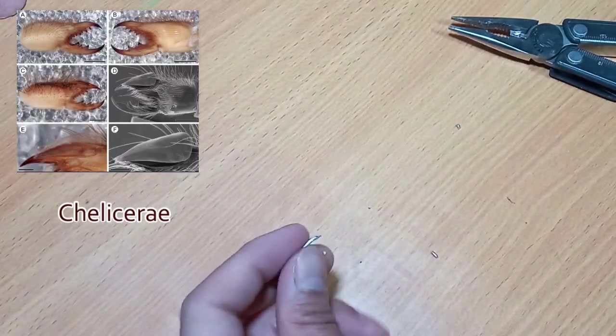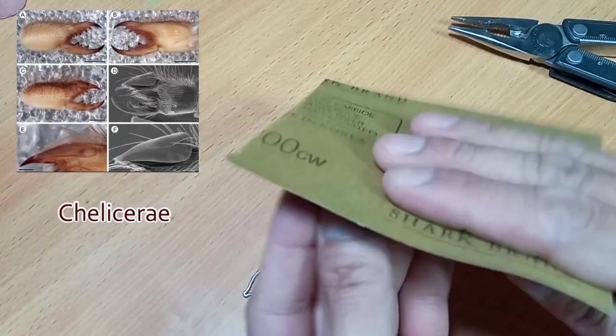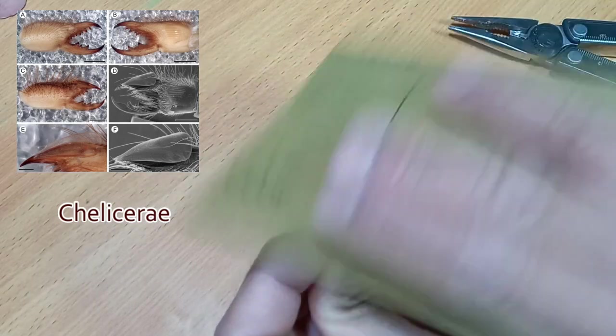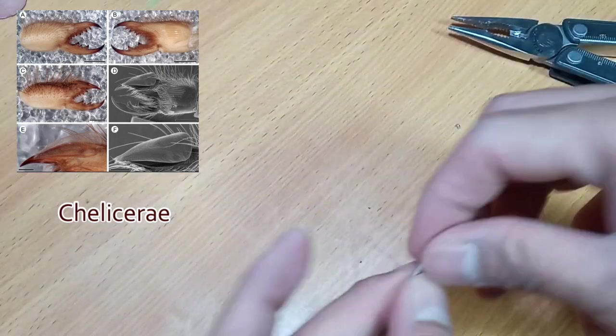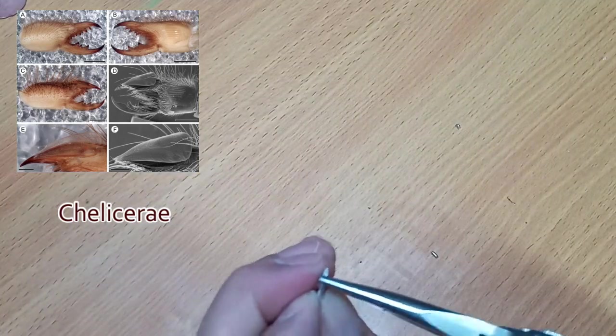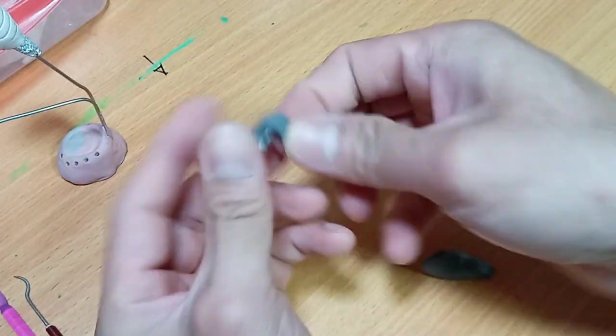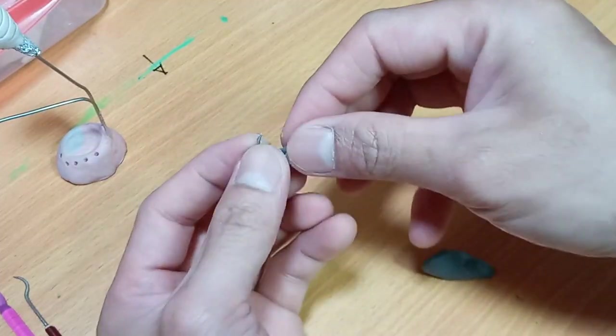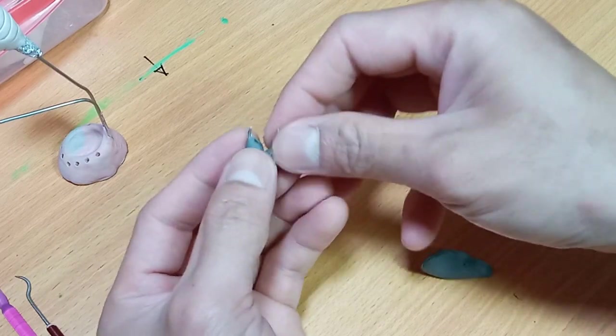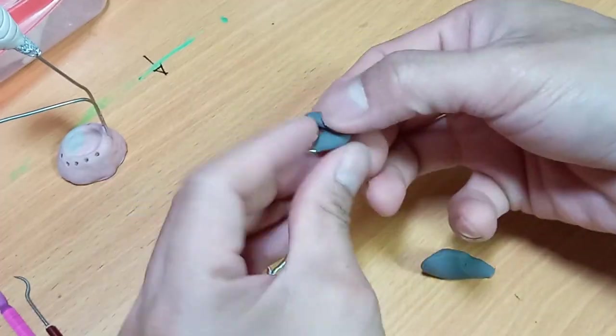These are called chelicerae or pincer-like claws, or let's call them jaws. They reciprocate back and forth almost like a saw and pull pieces of its prey out, sucking all the liquid nutrients on them until they almost disappear. What a horrible fate for a prey, isn't it?